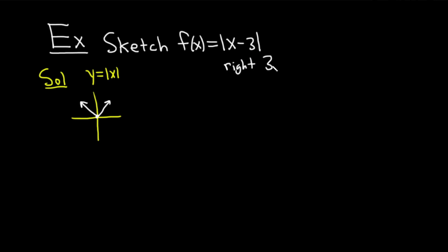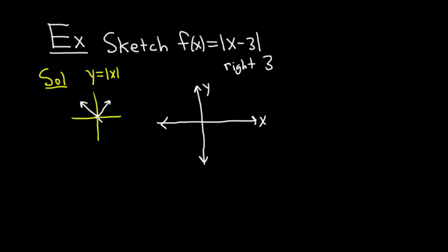If you subtract from your x, you go right; if you add to your x, you go left. We're going to take the graph of the absolute value and shift it to the right by 3. Here's the y-axis and here's the x-axis. You basically take the point at the origin and go right three tick marks — 1, 2, 3 — put a dot, and then draw your v. There's our graph.